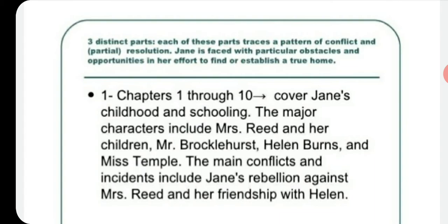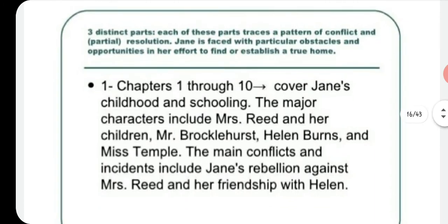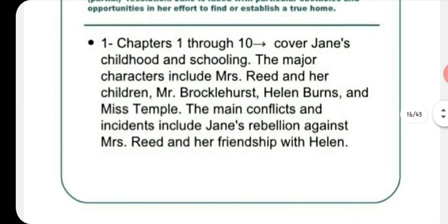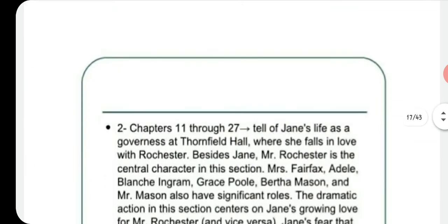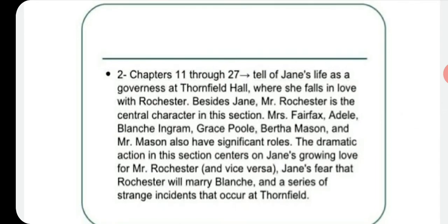The novel has three distinct parts. The first part covers chapters 1 through 10 and deals with Jane's childhood and schooling. The major characters include Mrs. Reed and her children. Mr. Reed had died, leaving Mrs. Reed to direct her cruelty and injustice toward Jane. Other key characters include Mr. Brocklehurst, Helen Burns, and Miss Temple. The main conflicts include Jane's rebellion against Mrs. Reed and her friendship with Helen.